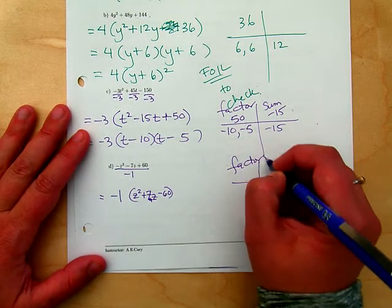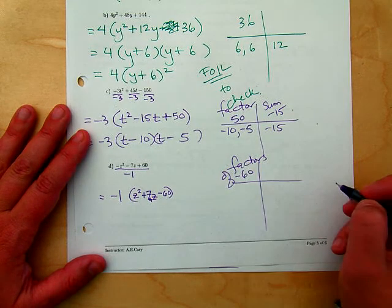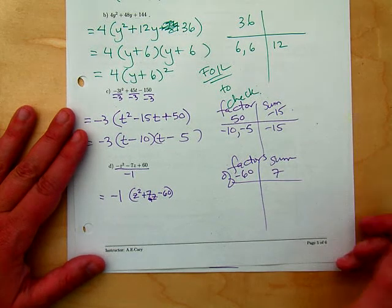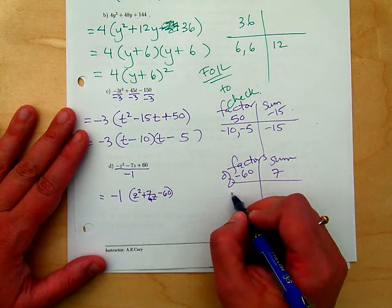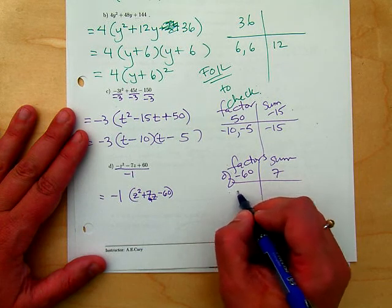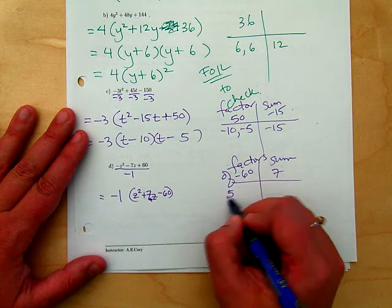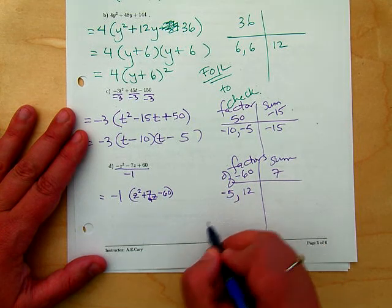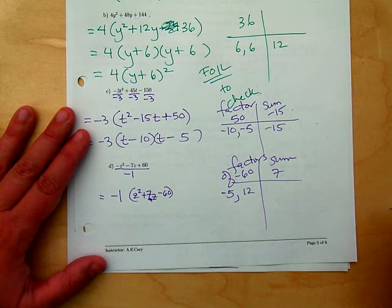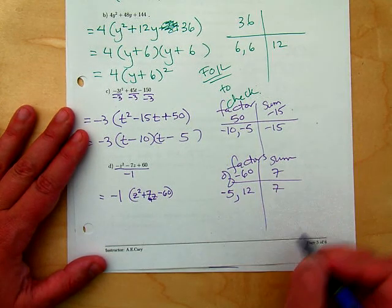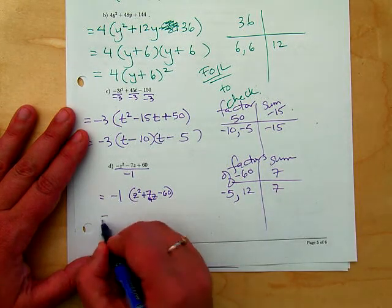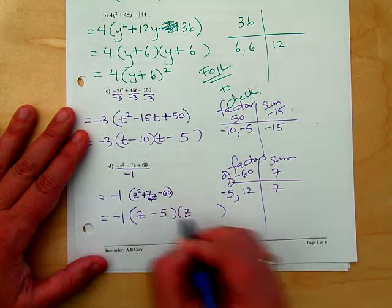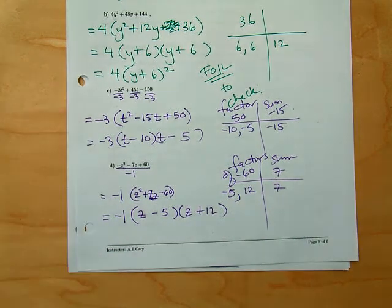Factors of negative 60 that have a sum of positive 7. I don't know what they are, but let's try 5 and 12. What signs? Positive 12 will give you a positive 7. Here we have negative 1 times z minus 5 times z plus 12. There I went in the same order. There was no pattern to that.